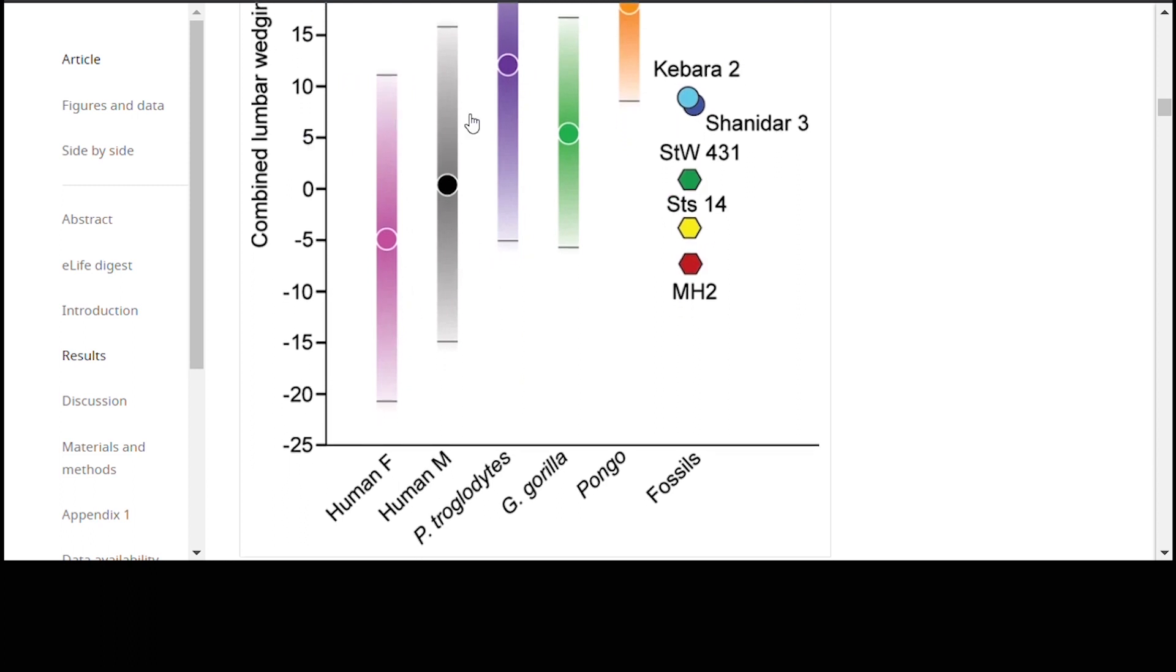So, we see here combined lumbar wedging and this is very interesting. We see here the human female, the human male, the chimpanzee is this purple one, the gorilla is the green one, and then orange is this orangutan.